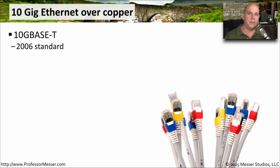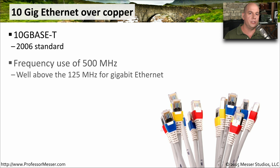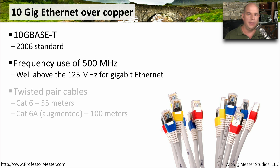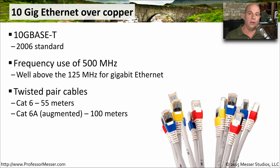Increasing Ethernet speeds by a factor of 10 brings us to 10 Gigabit connections. The 10 Gigabit Ethernet over copper standard is 10GBaseT, which came around in 2006, and requires frequencies up to 500 megahertz — much higher than Gigabit Ethernet's 125 megahertz. Because of these increased frequencies, a higher quality cable was needed, leading to the creation of Category 6. Category 6 allows 55-meter runs for 10 Gigabit Ethernet, while Cat6A — an augmented version — allows a full 100 meters running 10 Gigabit Ethernet over twisted pair.